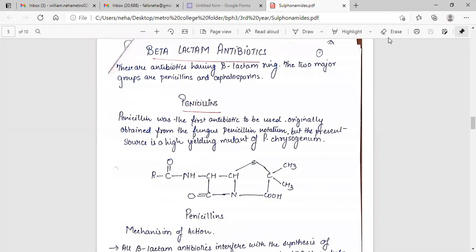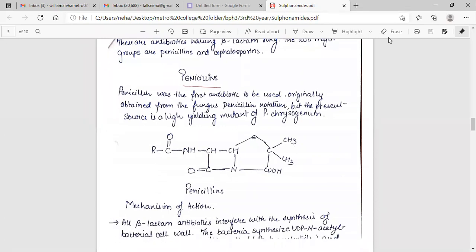Penicillin was the first antibiotic to be used, originally obtained from the fungus Penicillium notatum. But the present source is a high-yielding mutant of P. chrysogenum.